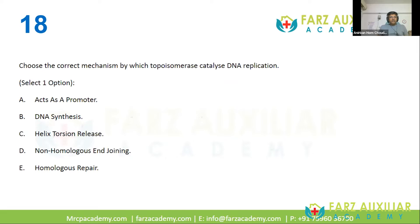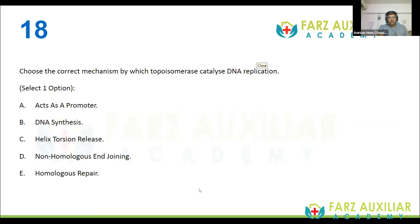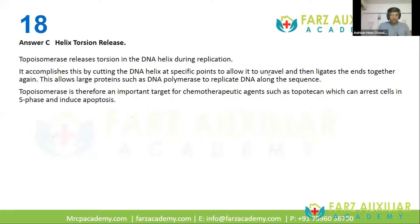Choose the correct mechanism by which topoisomerase catalyzes DNA replication. Options: acts as a promoter, DNA synthesis, helix torsion release, non-homologous end joining, or homologous repair. The correct answer is helix torsion release. Topoisomerase relieves distortion in the DNA helix during replication by cutting the DNA helix at specific points, allowing it to unravel, then ligating the ends together again. This allows large proteins such as DNA polymerase to replicate DNA. Topoisomerase is therefore an important target for chemotherapy agents like topotecan.